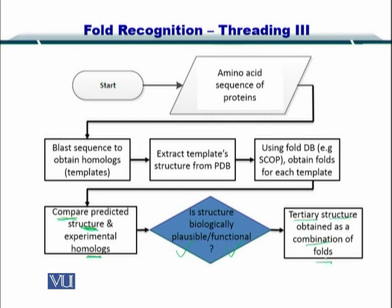You can select one fold from one PDB entry, another fold from some other PDB entry, yet another fold from a different PDB entry, and combine them to create and predict the structure for the sequence you are looking for.